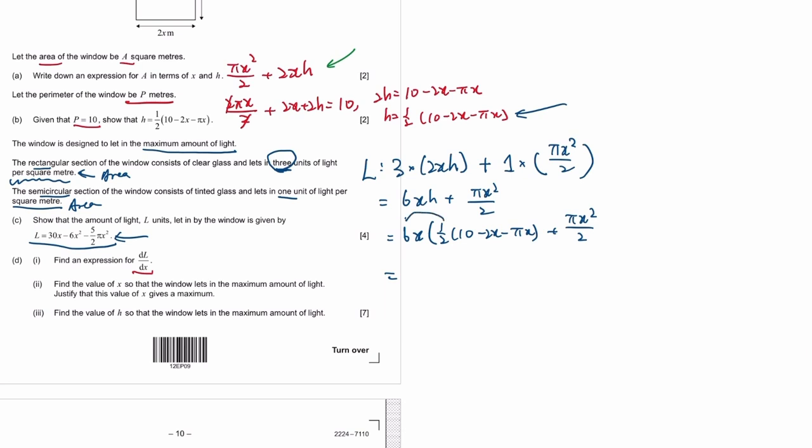We have what, we have half times 6, so that's 3. 3 and then we have 3x. I will expand that all in. So 3x, put it that way. 3x times 10, so that's 30x. 3x times minus 2x, so that's minus 6x².